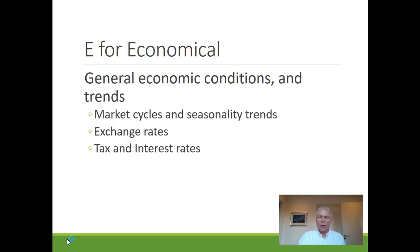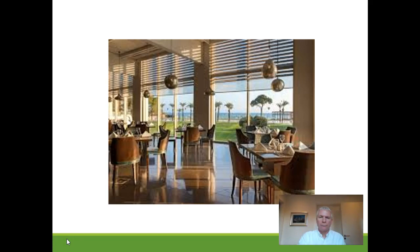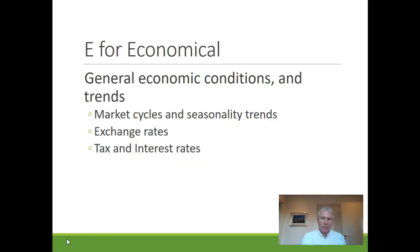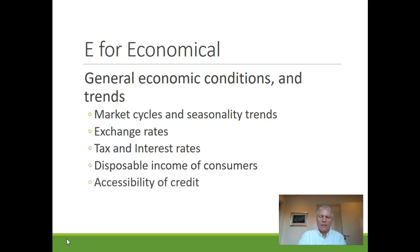Other areas to cover in the Economic section include disposable income of consumers, which influences how you market and price your products and services. Accessibility of credit is relevant — the financial crisis made it very difficult to finance operations and further development of firms. Unemployment rates could also be considered. High unemployment creates possibilities for lower labor costs but could also influence the firm's revenues, while low unemployment could increase labor costs and make it difficult to get the right employees, but potentially allow you to sell more products and services.